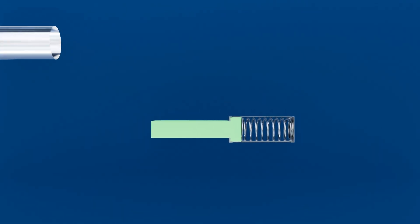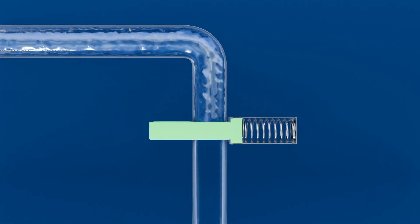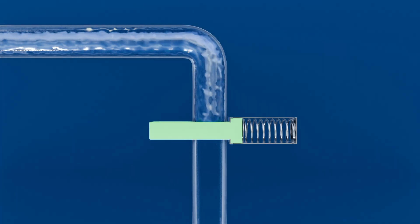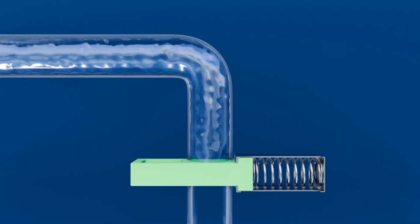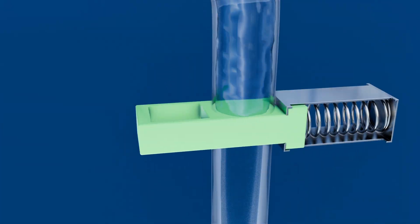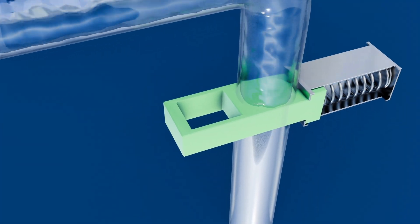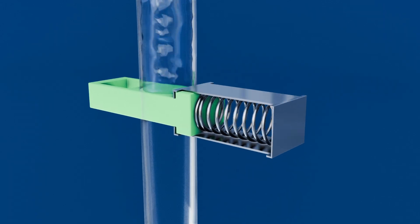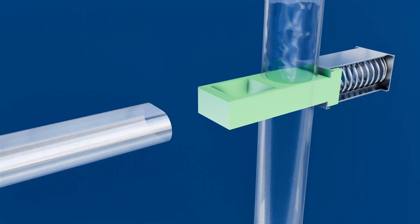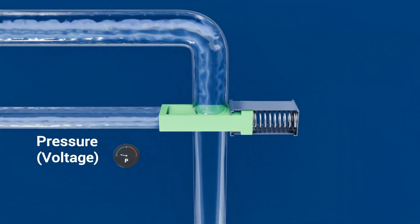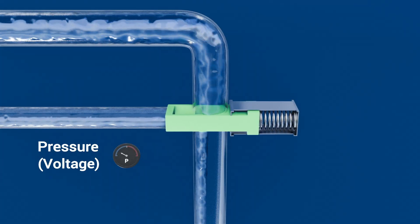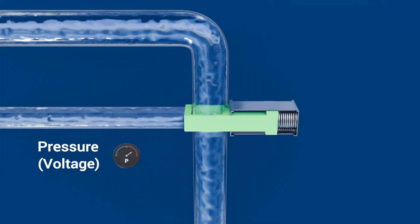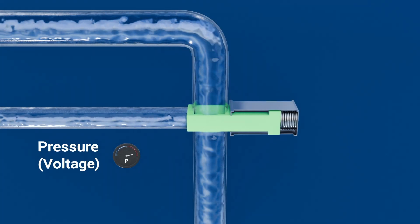A good visual example: imagine a pipe with water flowing through it. We can block the flow with a spring-loaded plate that has a hole in it. Another pipe connects to this plate — with high enough pressure or voltage, the plate moves and allows water to flow through the hole. The higher the pressure or voltage, the higher the flow of water.